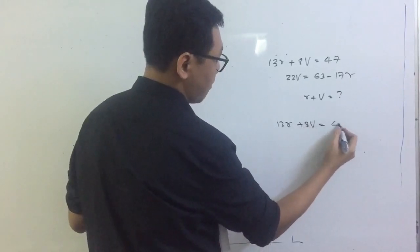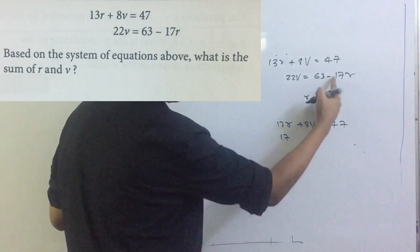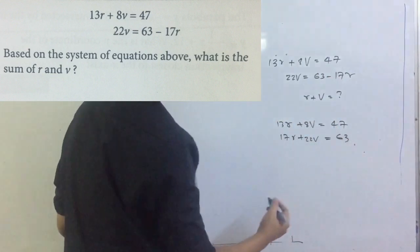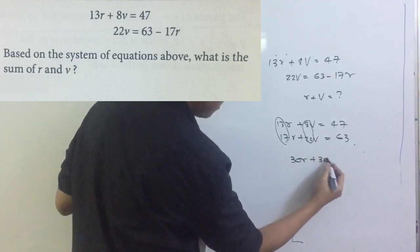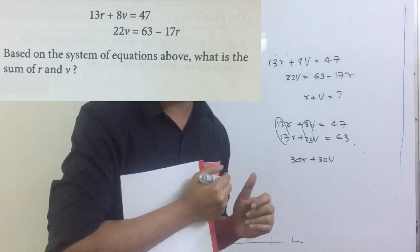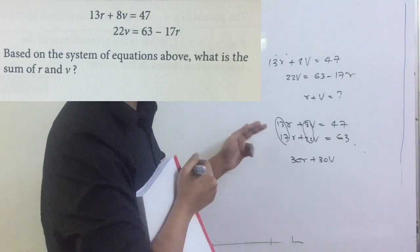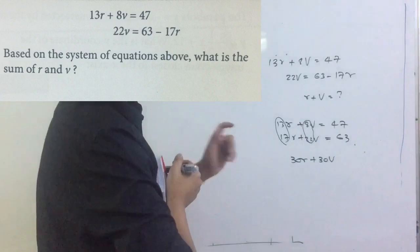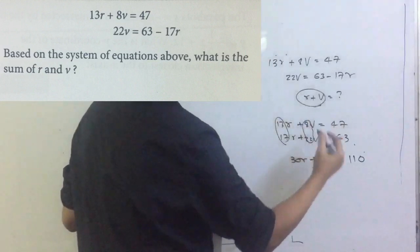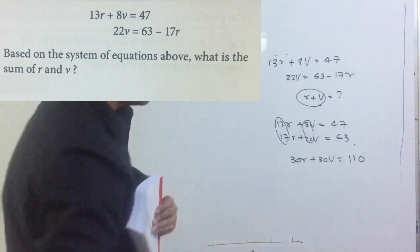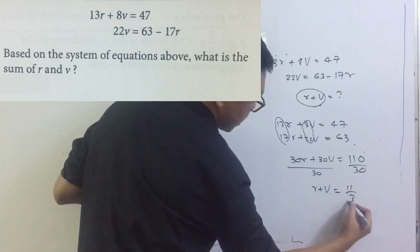So with 13R plus 8V equals 47, and rearranging so that 17R is moved over — negative changes to positive — and adding gives 30R plus something equals 110. They want R plus 3V, so I divide by 30. The 30 cancels and you get 11 over 3 as the answer. It's very fast. Always try adding or subtracting and see the pattern first before trying elimination or substitution.